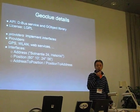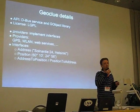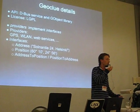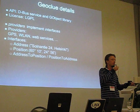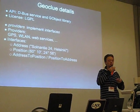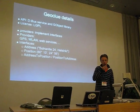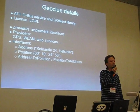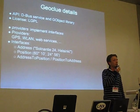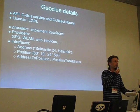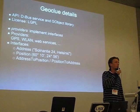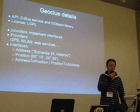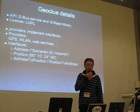GeoClue is a D-Bus service and there are several interfaces. You can query your coordinates, your address, or you can ask for what is this address as your coordinates. We have several providers implementing those interfaces, which means that a GPS provider will implement a position interface, but probably not an address, because it doesn't have it.